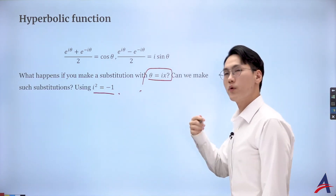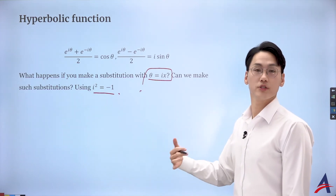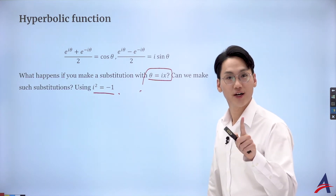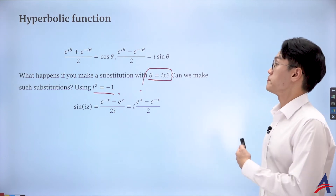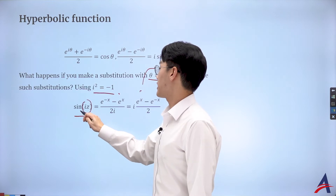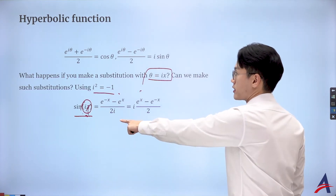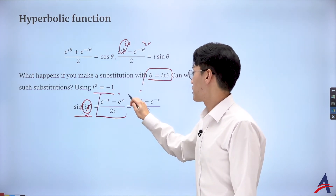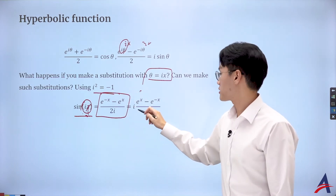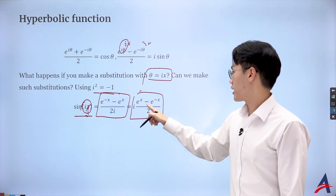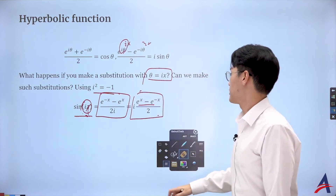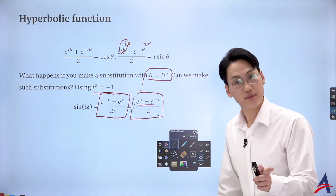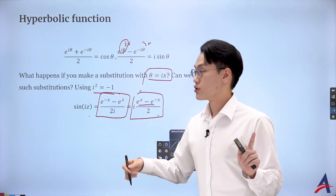But we can develop this further. I want to make a fancy substitution: replace theta with ix, where i is the imaginary number and x is real. You might ask: is it valid to substitute ix? You're right to question it — you can investigate further for an IA. But let's suppose it is valid. If I plug ix into the sine formula, I get ix in both places, making i squared equal to negative 1. After rationalizing, I get negative i times the expression, which turns out to be the hyperbolic sine.